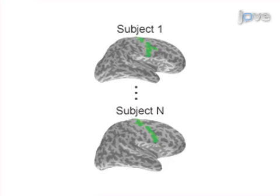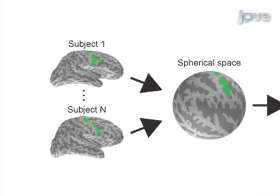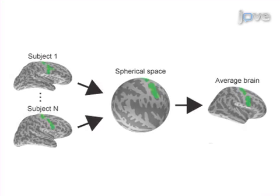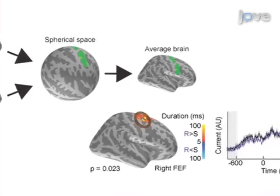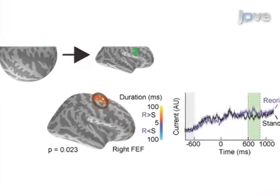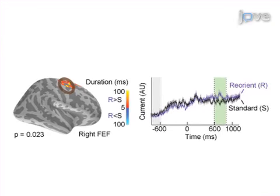Ultimately, statistical inference based on a common surface-based coordinate system is used to discover significant spatiotemporal patterns that distinguish one cognitive state from another. Demonstrating the procedure will be Eric Lassen and Ross Maddox, who are postdocs in my laboratory.